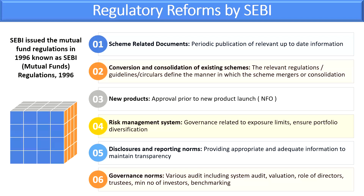Disclosure and reporting norms involve providing appropriate and adequate information to maintain transparency. Mutual funds are among the best investment vehicles, and one reason is transparency. To maintain this transparency, SEBI has many provisions: time-to-time information and reporting to SEBI — quarterly, half-yearly, and annually — must be provided, so that complete transparency is maintained. This is the beautiful part of mutual funds.